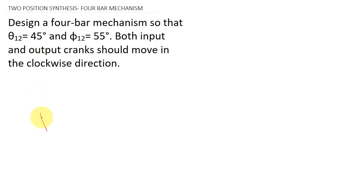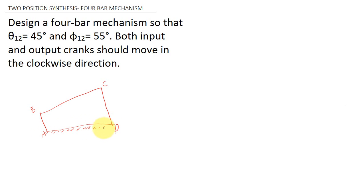First of all, I will draw a four-bar mechanism. So let this be a four-bar mechanism with points A, B, C, and D — this is the fixed one. This is the fixed link and this is the crank. AB is the crank and it is rotating in a clockwise direction. This angle is equal to theta, and this angle is actually phi.